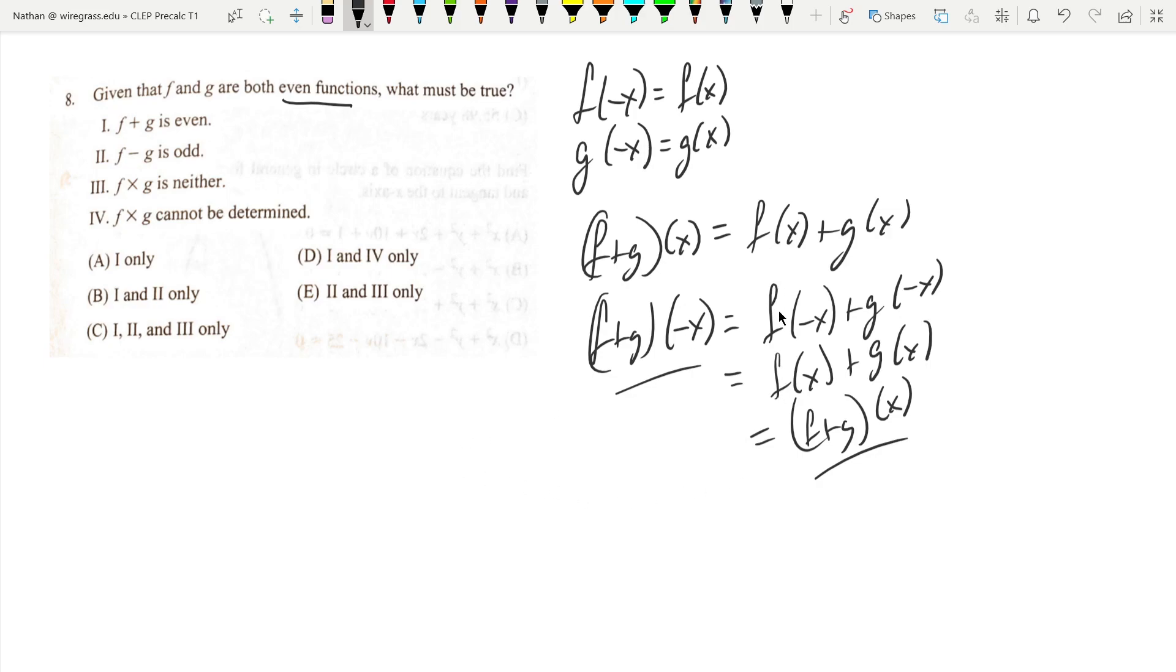Now, if f minus g is odd, then f minus g of negative x is going to equal negative f minus g of x. That's what an odd function does—you can pull the negative outside of the x right in front of the function. Well, here we have f minus g of negative x is the same thing as f of negative x minus g of negative x.